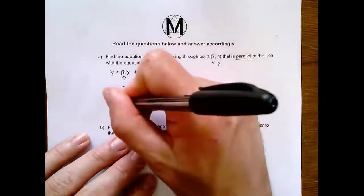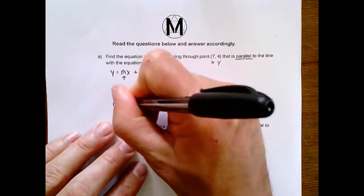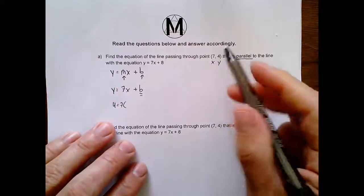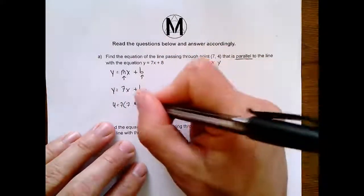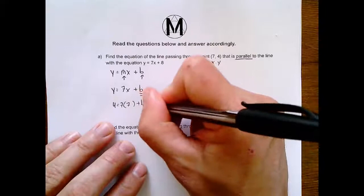So instead of y, I'm going to write 4 equals 7. Instead of x, I'll write 7, which is just the same as my slope in this case, plus b.